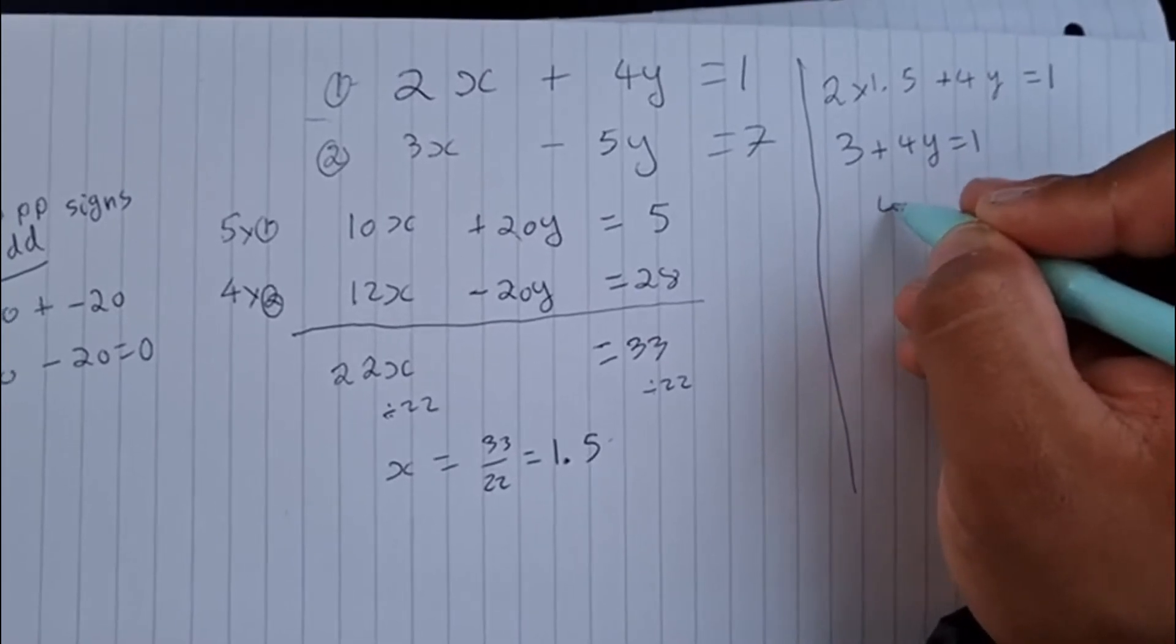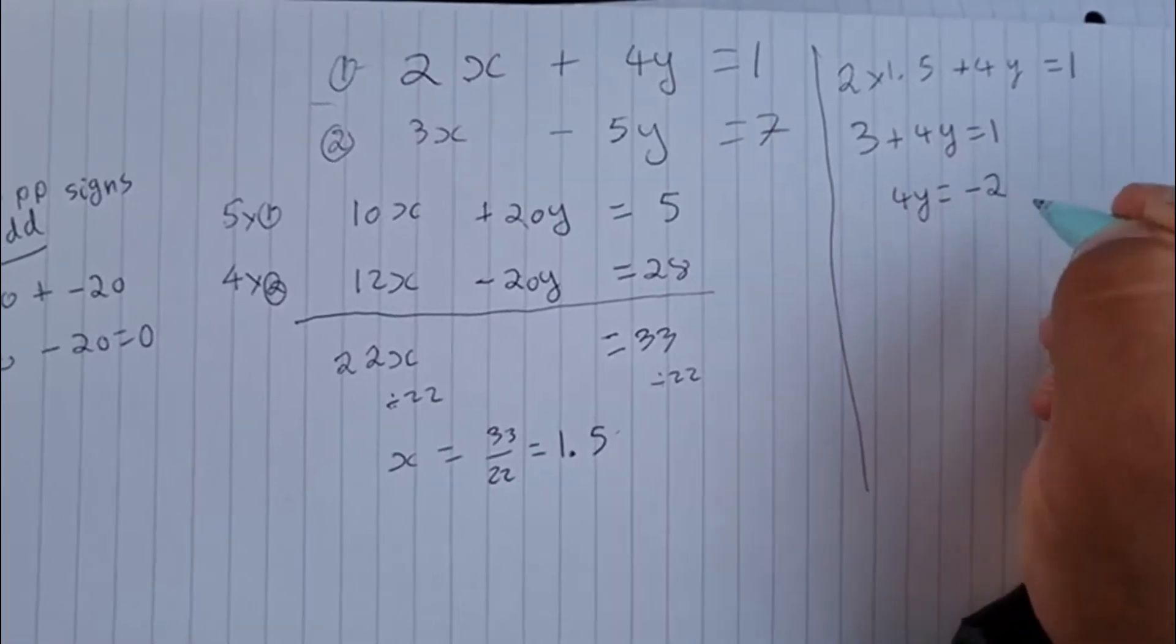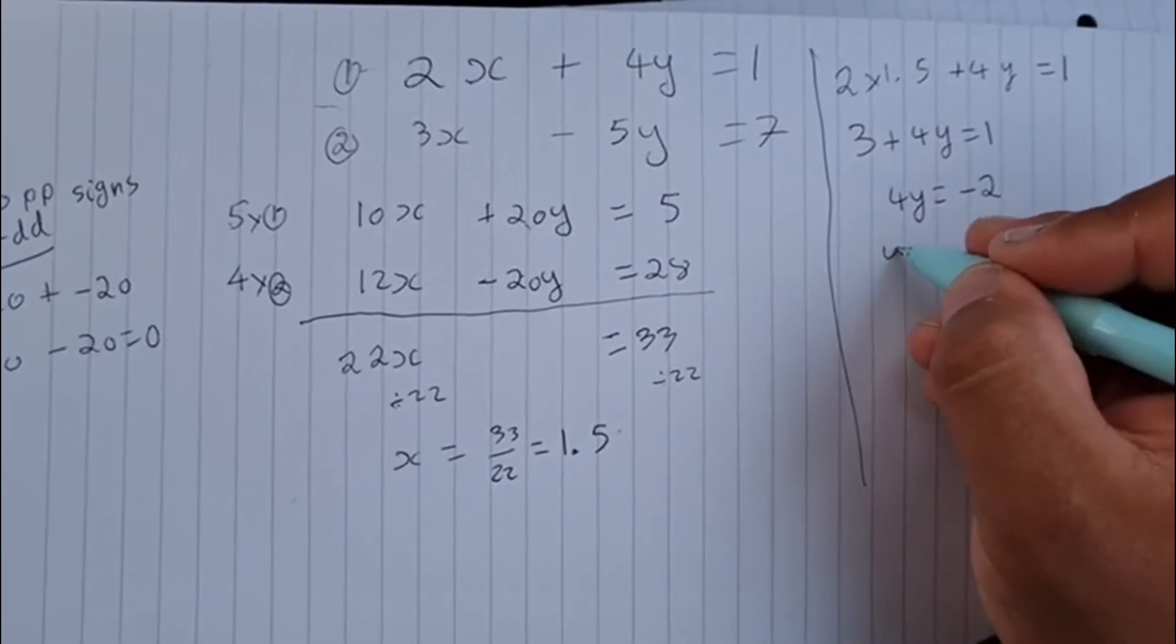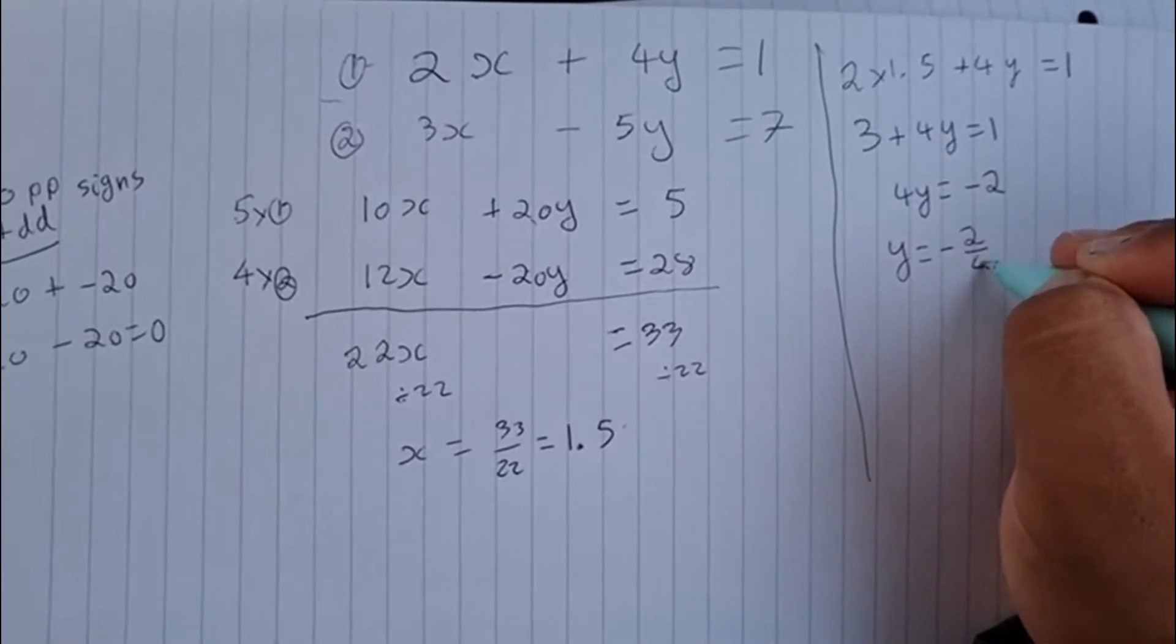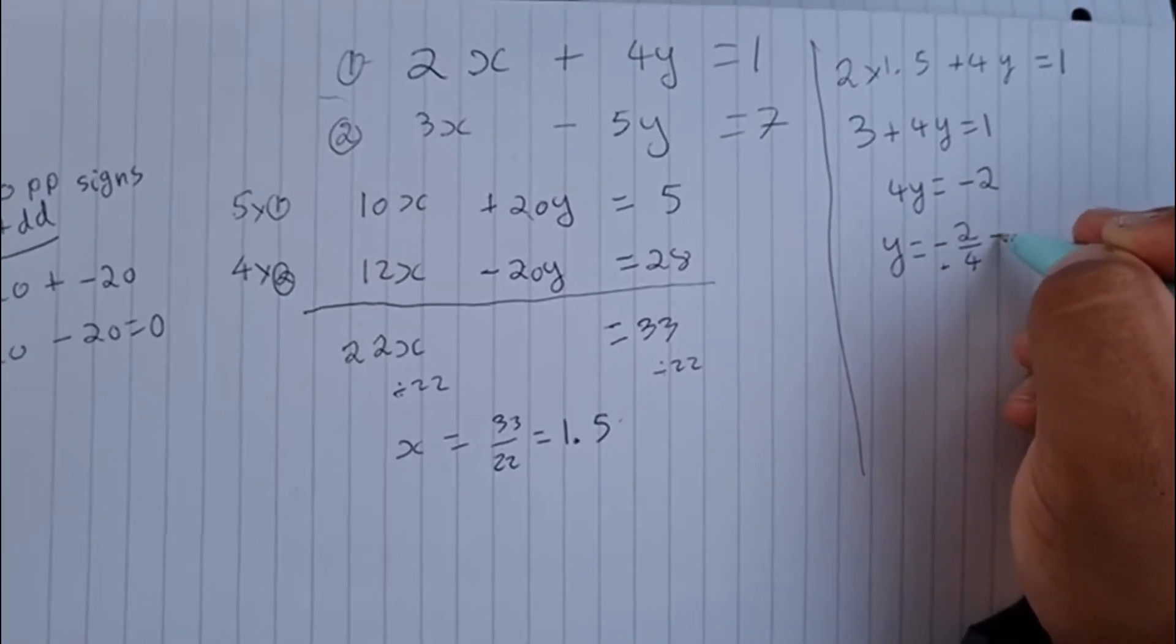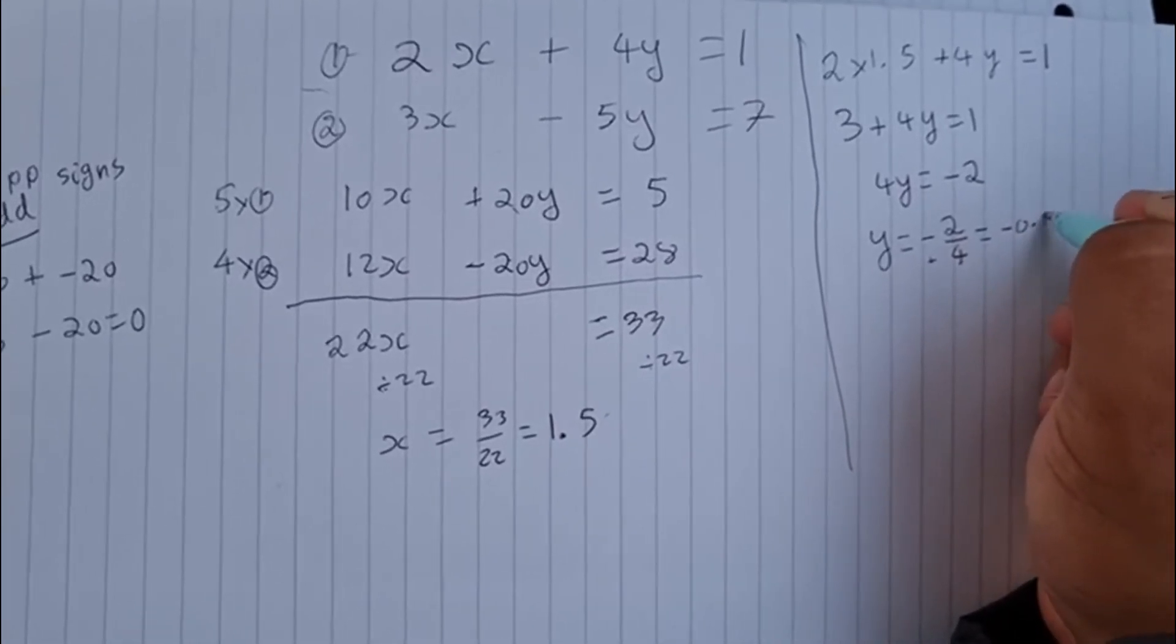So 4y is equal to 1 take away 3, which is minus 2. I divide both sides by 4. So y is equal to minus 2 divided by 4. A minus divided by a plus is a minus, so I have minus 2 divided by 4, which is minus 0.5.